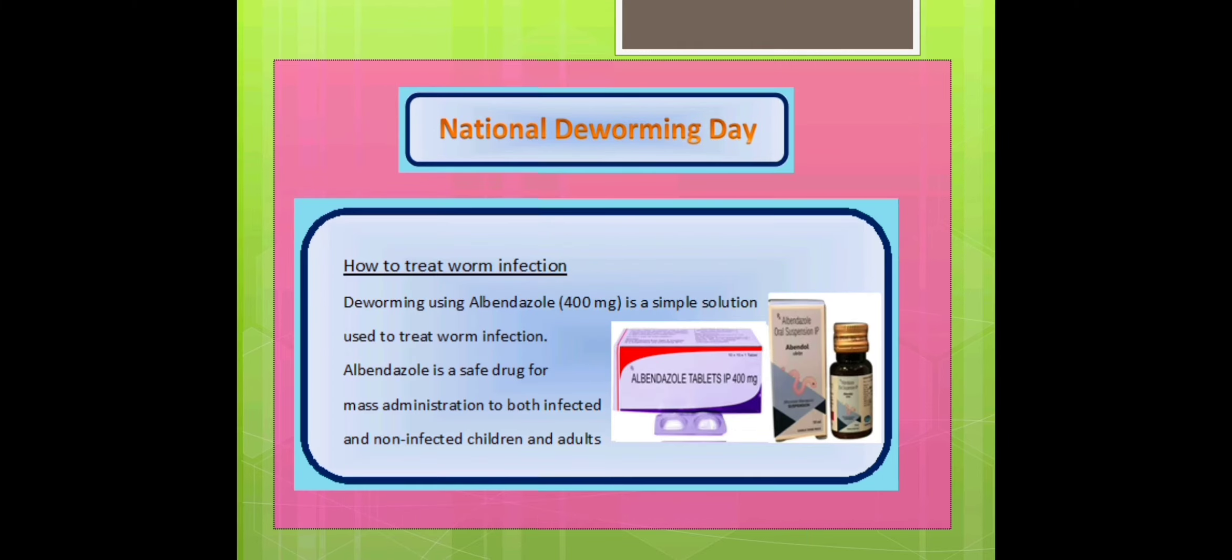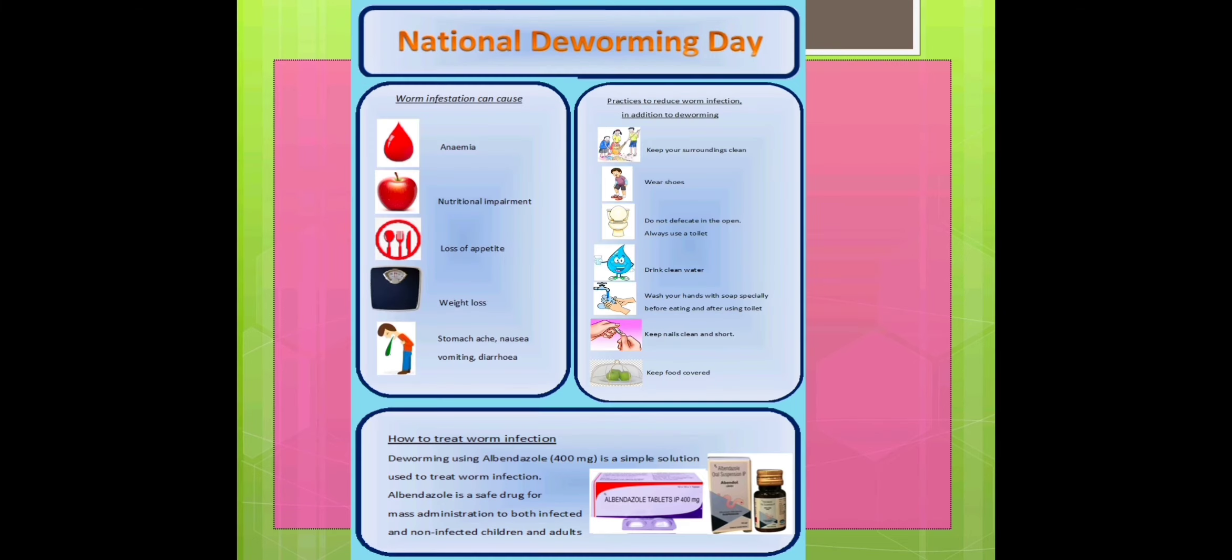Now, the next part is, how to treat worm infection. Deworming using albendazole 400mg is a simple solution used to treat worm infection. Albendazole is a safe drug for mass administration, both infected and non-infected children and adults. Because it is a safe drug, it's a safe medicine for everyone.